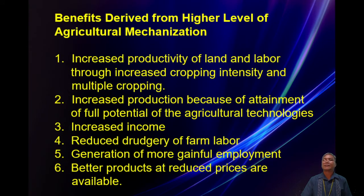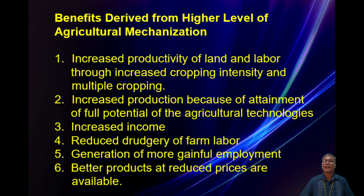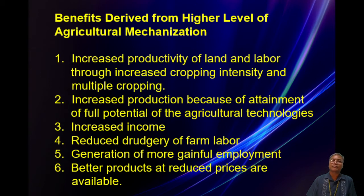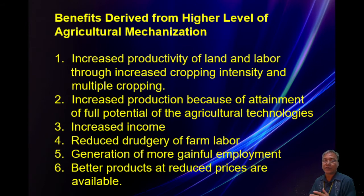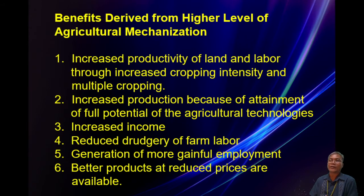So what are the benefits derived from higher levels of agricultural mechanization? Number one is increased productivity of land and labor through increased cropping intensity and multiple cropping. You can increase the productivity of land and labor by intensifying your production and planting through multiple cropping. There are some food plants that should not be planted consecutively, so maybe you alternate them with other crops — for example, if you plant rice now, afterwards you can plant pechay or other crops.